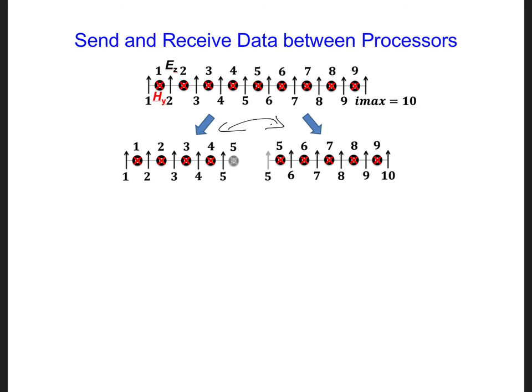This means that the ghost field components here will just be equal to zero over all time because those components are updated on other processors. As a result, we need to manually give these values by sending data between the processors.